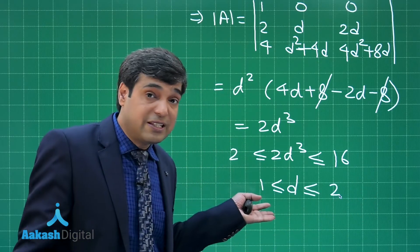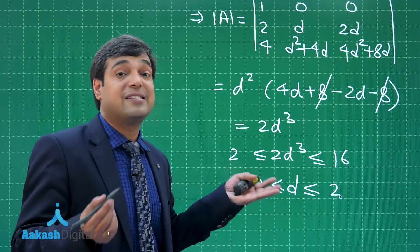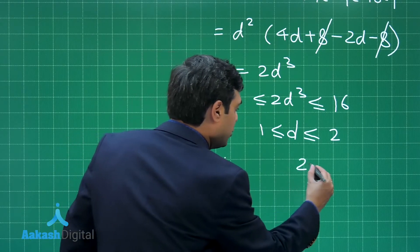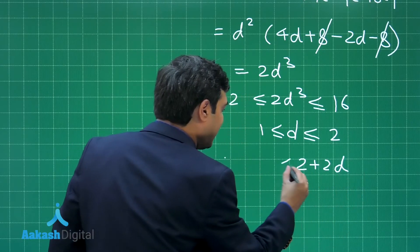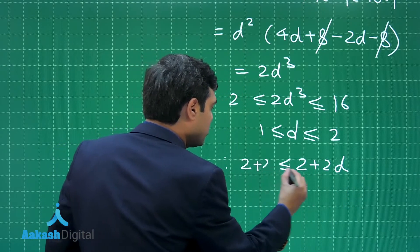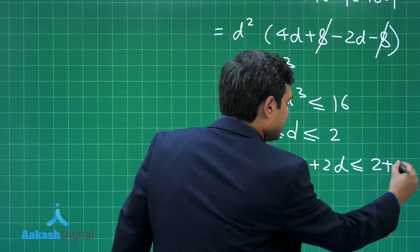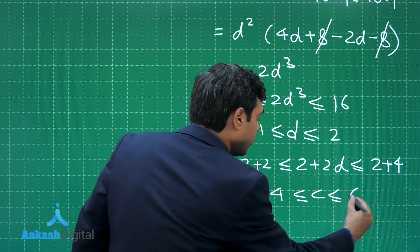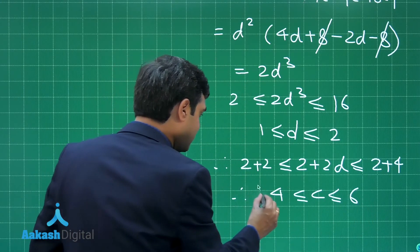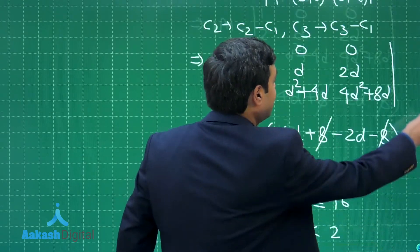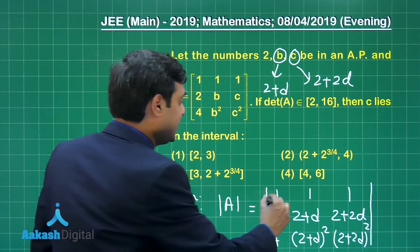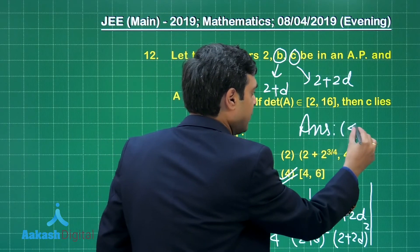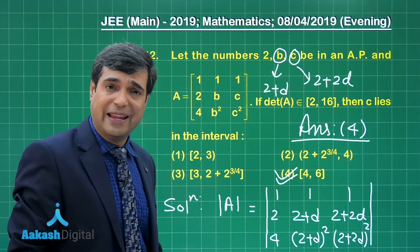Question is in which interval C is lying? What is C? C is 2 + 2D. So just get the result. Therefore, 2 + 2D is lying in the interval 2 + 2 and 2 + 4. Therefore, C is lying in the interval [4, 6]. So I am sure this question is clear. C is lying in the interval 4 to 6. Is it available? Yes. Option number 4 is the correct answer. I am sure this is clear. Let us move on to the next one.